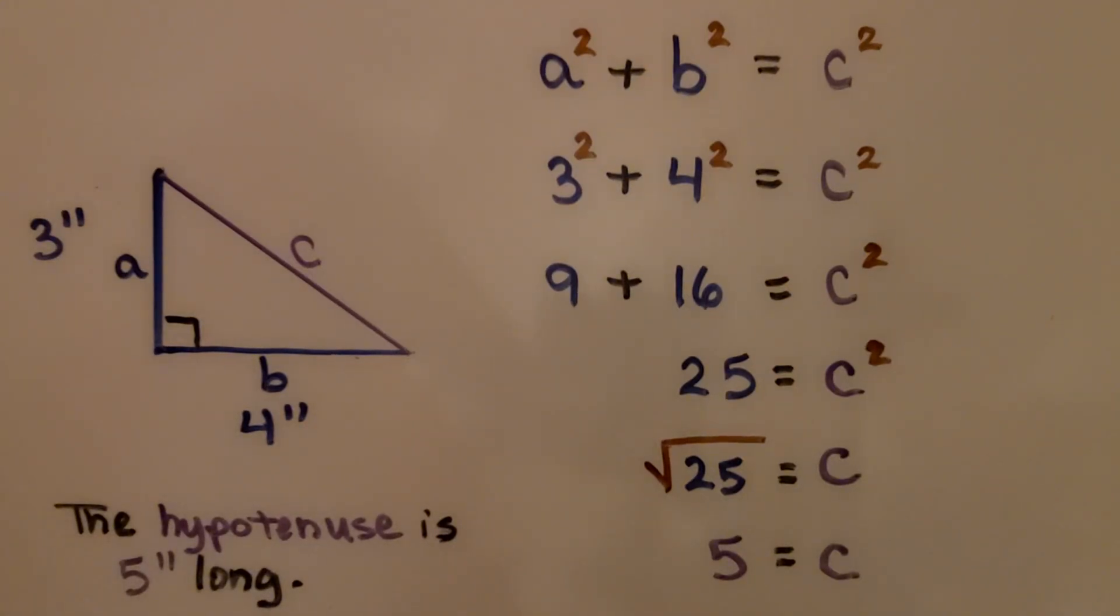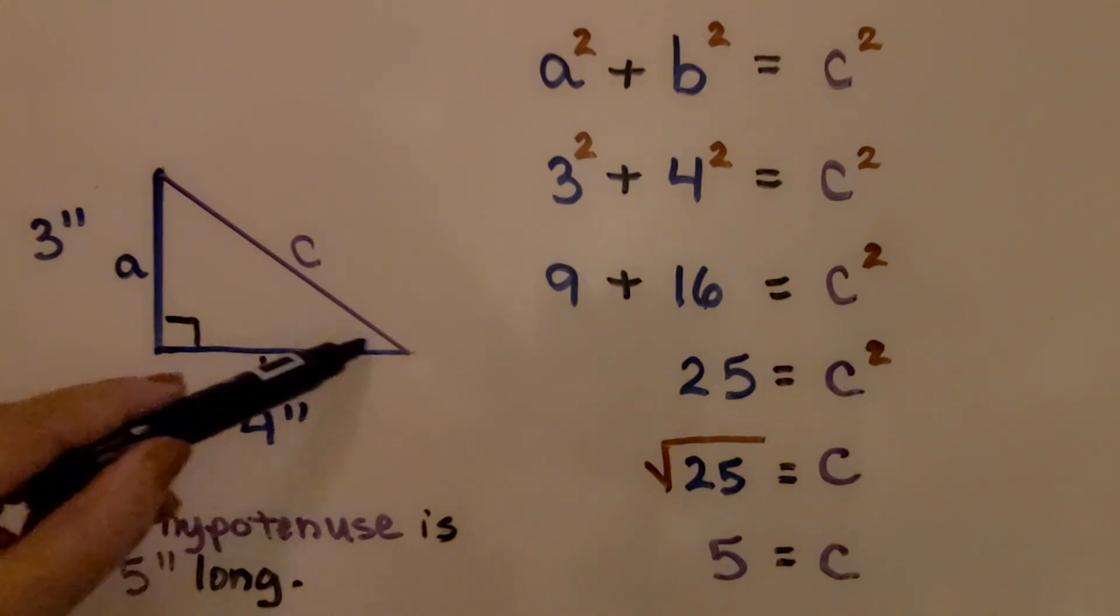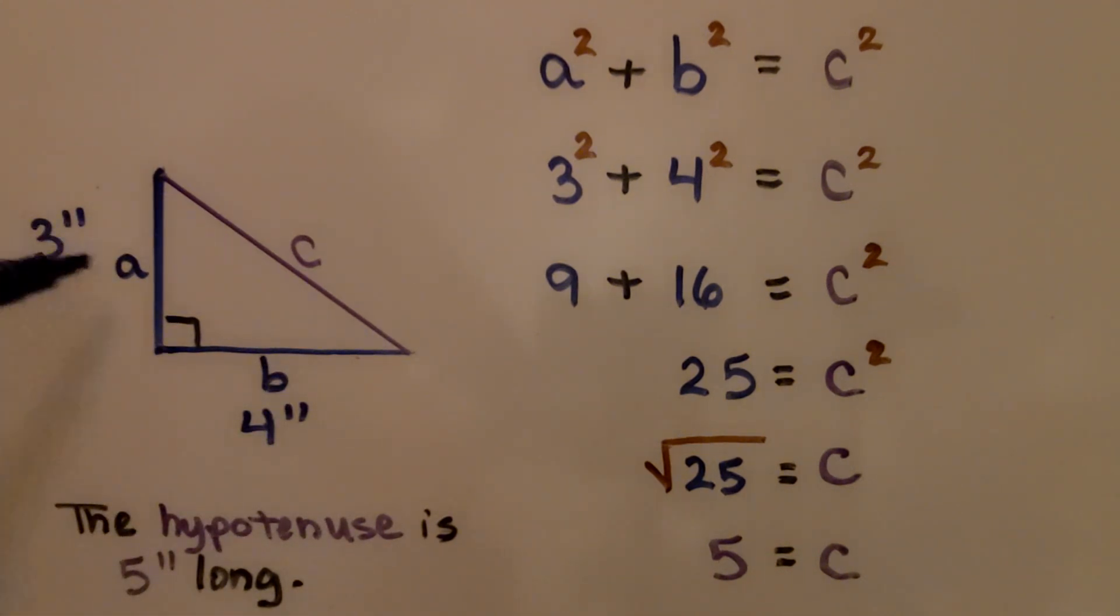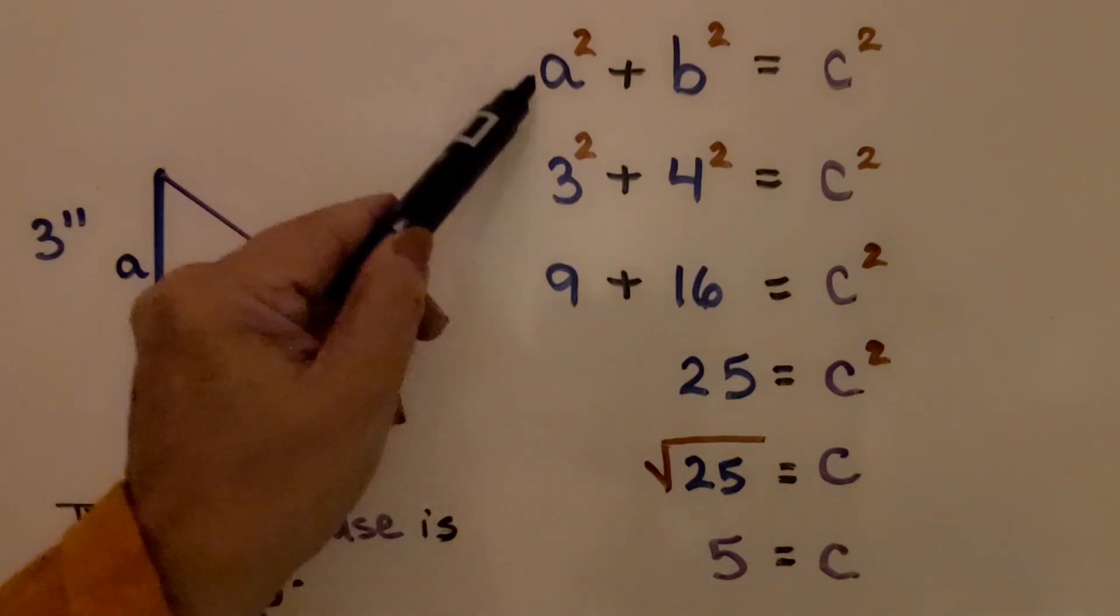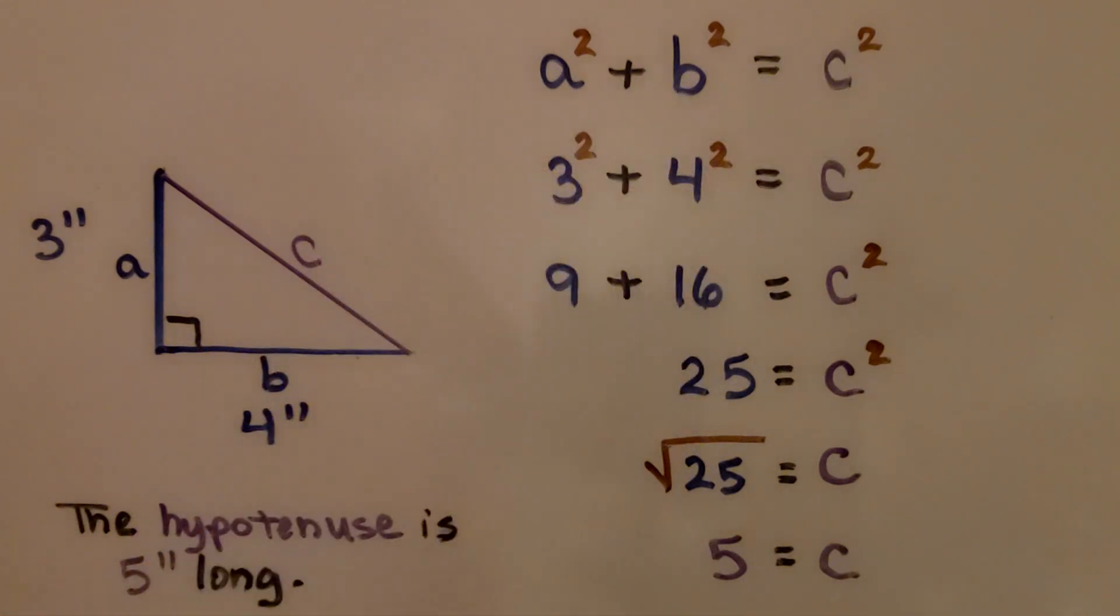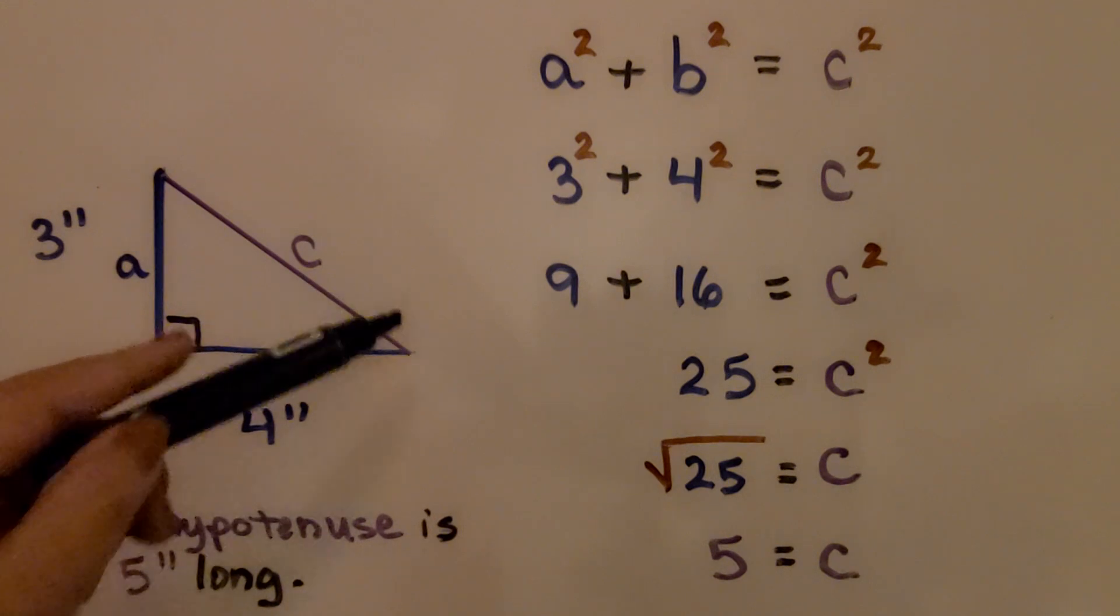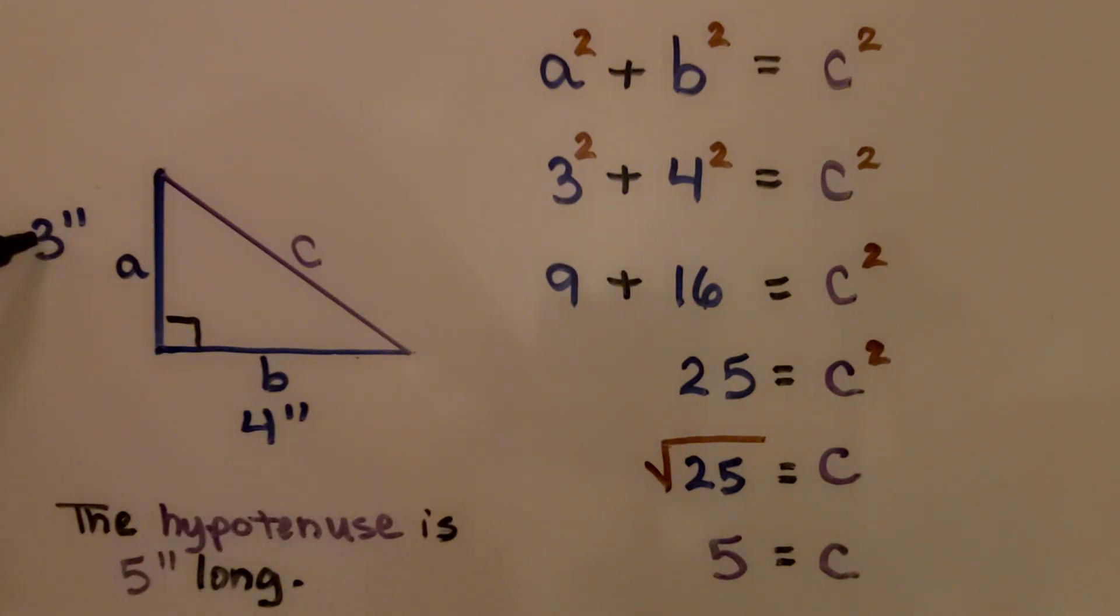So here we have a right triangle, and here's side a, here's side b, and it's telling us that side a is three inches in length, and side b is four inches in length. We know a squared plus b squared is equal to c squared now. We can find the length of this hypotenuse by doing three squared plus four squared.